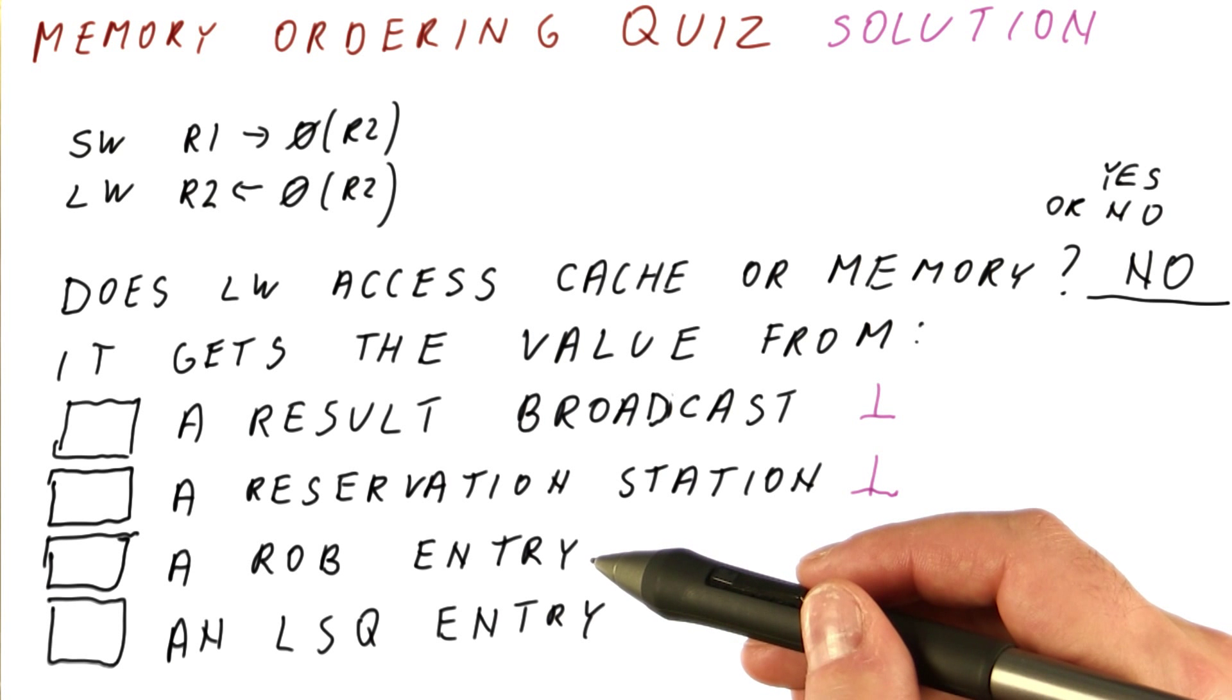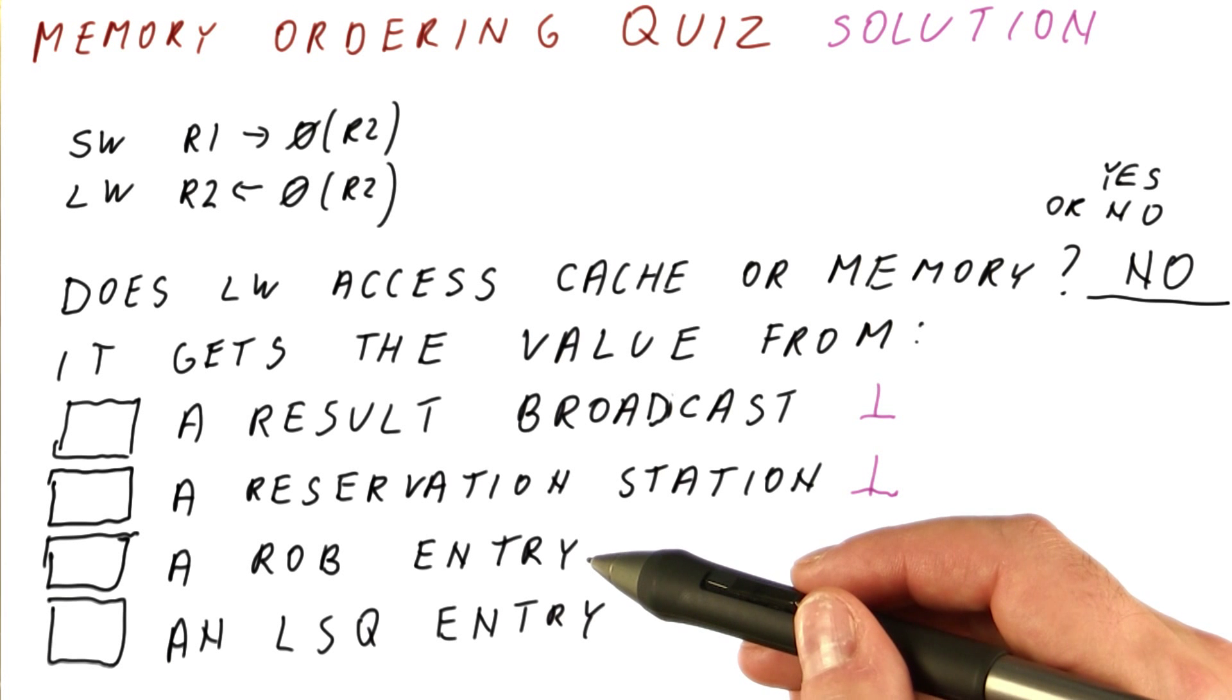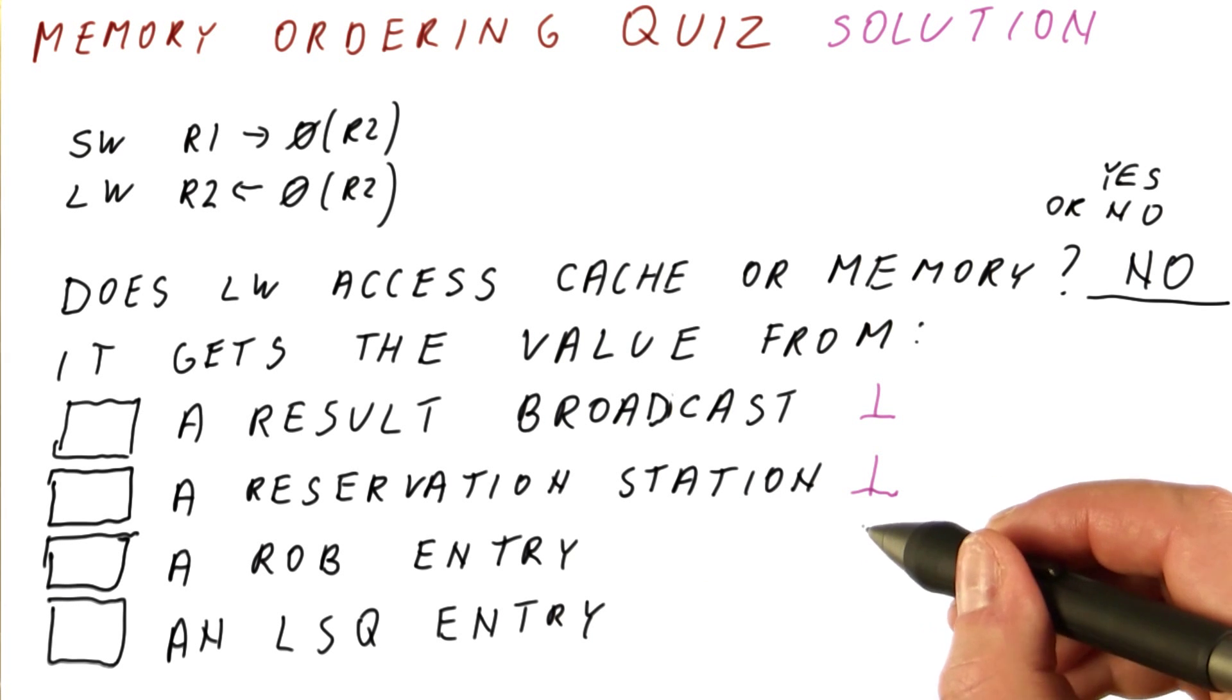A ROB entry would keep a result for a register-producing instruction between the time it's broadcast and when it commits. But because the store is not a register value producing instruction, it doesn't put its result in a ROB entry. In fact, technically the store doesn't have a result. So this is not correct.